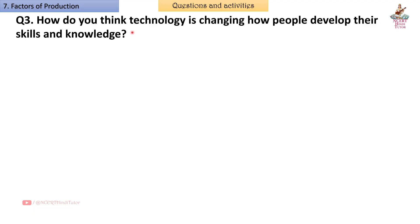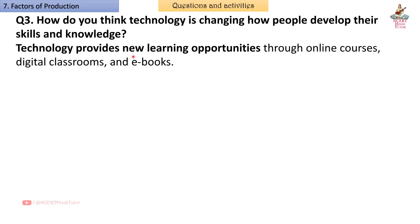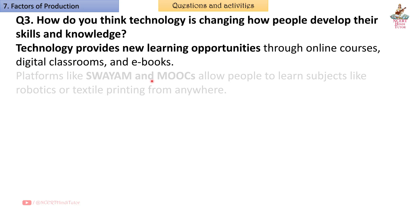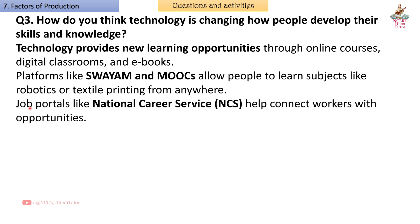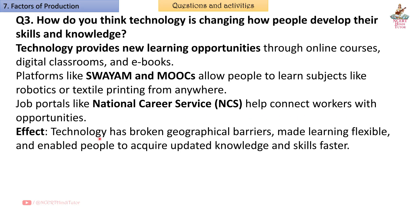Question 3: How do you think technology is changing how people develop their skills and knowledge? Answer: Technology provides new learning opportunities through online courses, digital classrooms, and e-books. Platforms like Swayam and MOOCs allow people to learn subjects like robotics or textile printing from anywhere. Job portals like National Career Service help connect workers with opportunities. Technology has broken geographical barriers, made learning flexible, and enabled people to acquire updated knowledge and skills faster.